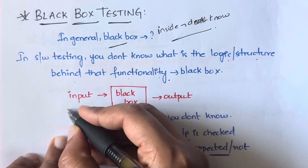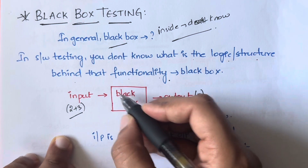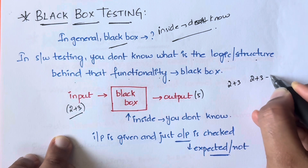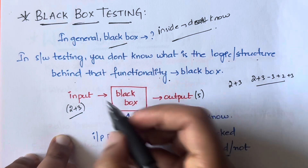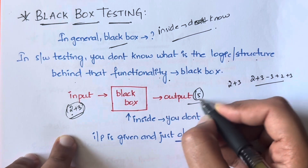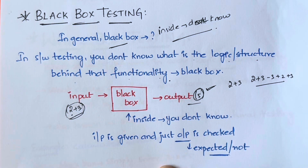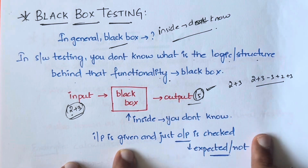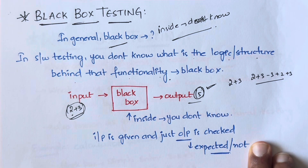You will have a set of inputs and a set of expected outputs, and you will just compare both of them. What is happening inside and how that result is coming — you don't care. For example, you gave an input of 2 plus 3 and it gave an output of 5. It doesn't matter what happened inside — whether it is doing 2 plus 3 directly or some other way. You gave 2 plus 3, you got the output as 5, the expected output matched, so the test is completed.